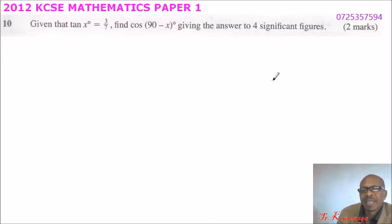You can make a simple illustration here like this. So this is a right-angle triangle. If this angle is x, it means that this side is 3 and this side is 7.